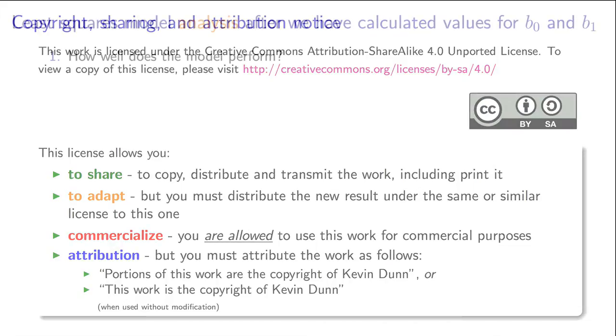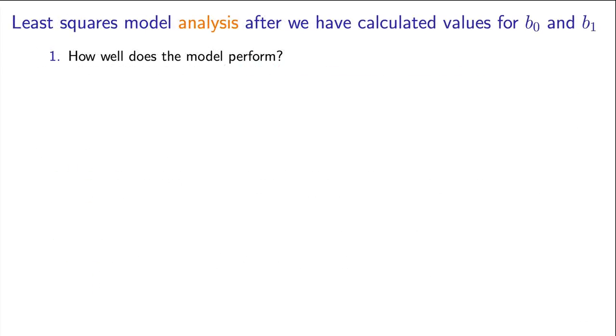This next video looks at analyzing the model once we've built it. The prior video showed how we calculate the values of B0 and B1. Now we're interested in answering some other questions, such as how well did the model perform, and what part of the data is error and what part of the data is systematic.